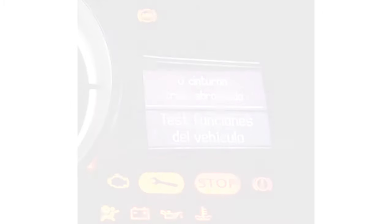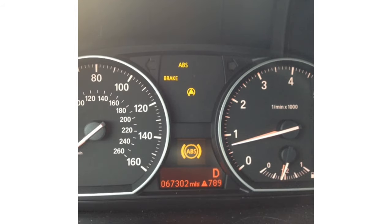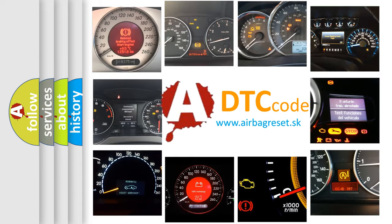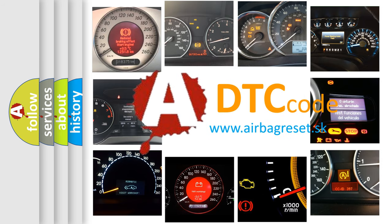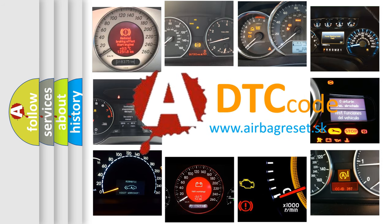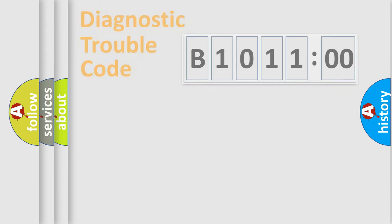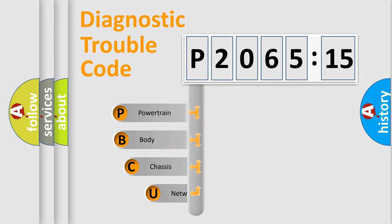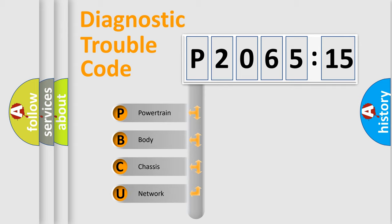First, let's look at the history of diagnostic fault code composition according to the OBD2 protocol, which is unified for all automakers since 2000. We divide the automobile's electrical system into four basic units: Powertrain, Body, Chassis, and Network. This distribution is defined in the first character code.